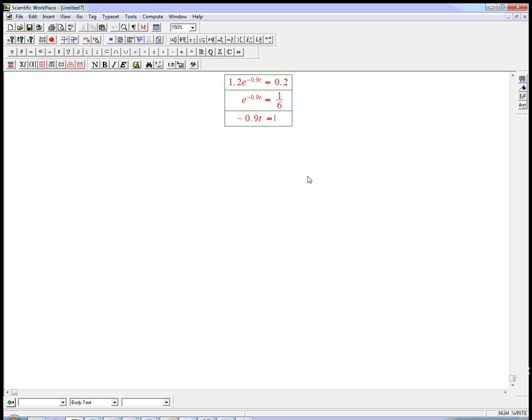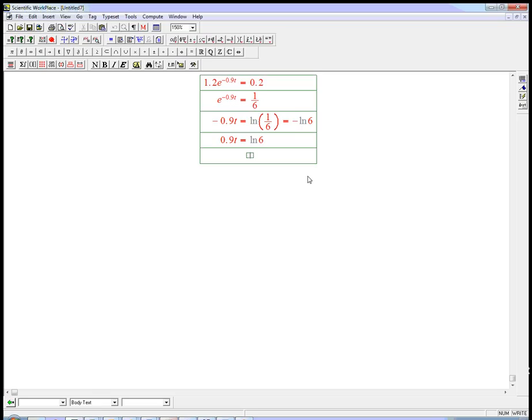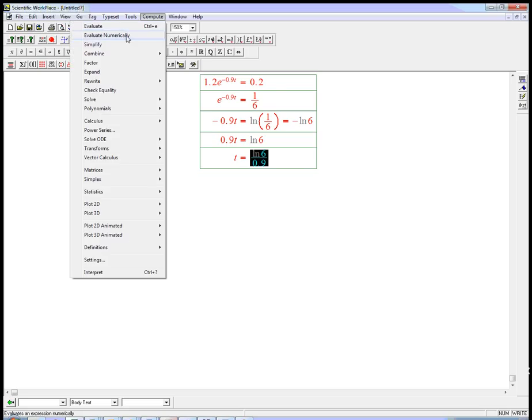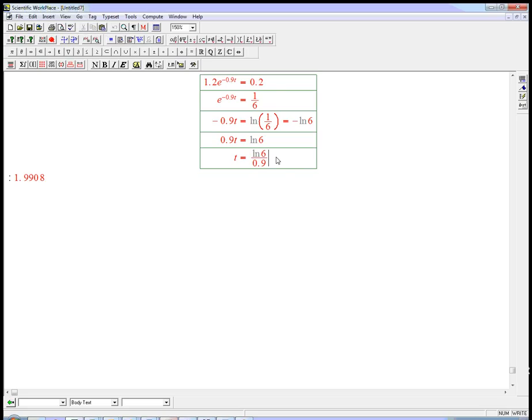We need a log. Minus 0.9t is ln of 1 sixth. Can't resist using rules of logs there. That's minus ln 6. And the minus is cancel. You don't have to do that, at some point you're going to need a calculator anyway, but it's nice to practice our rules of logs. And that's going to be ln 6 over 0.9, which equals 1.99. So t equals 1.99.